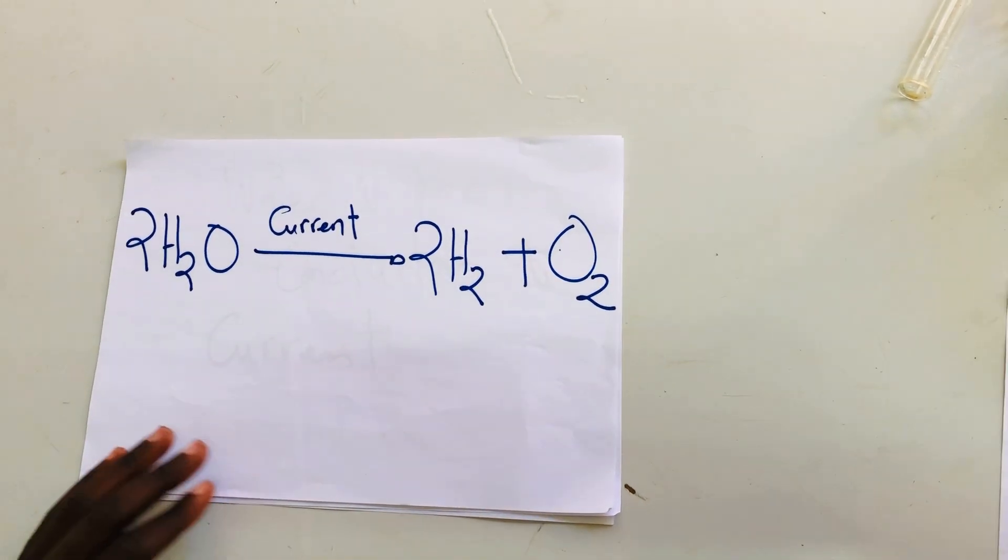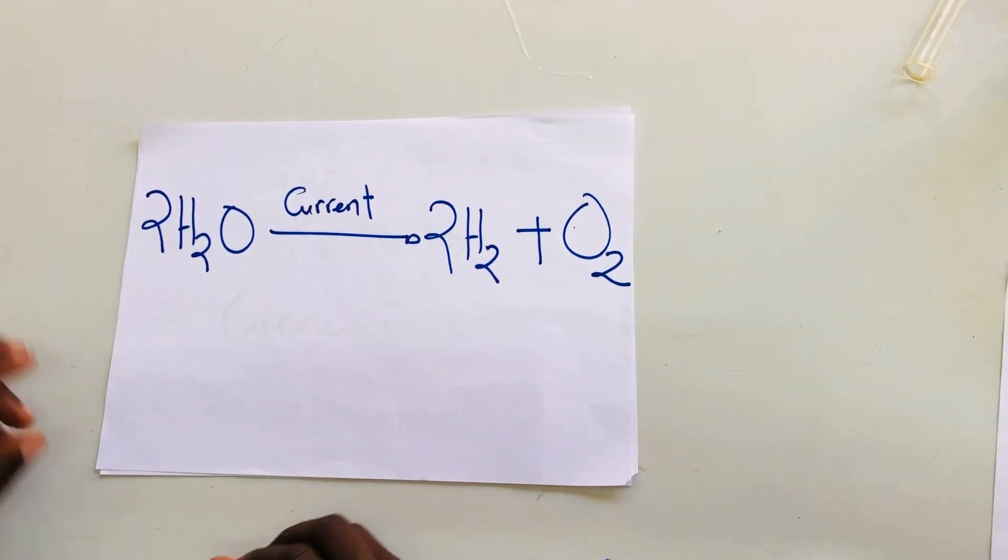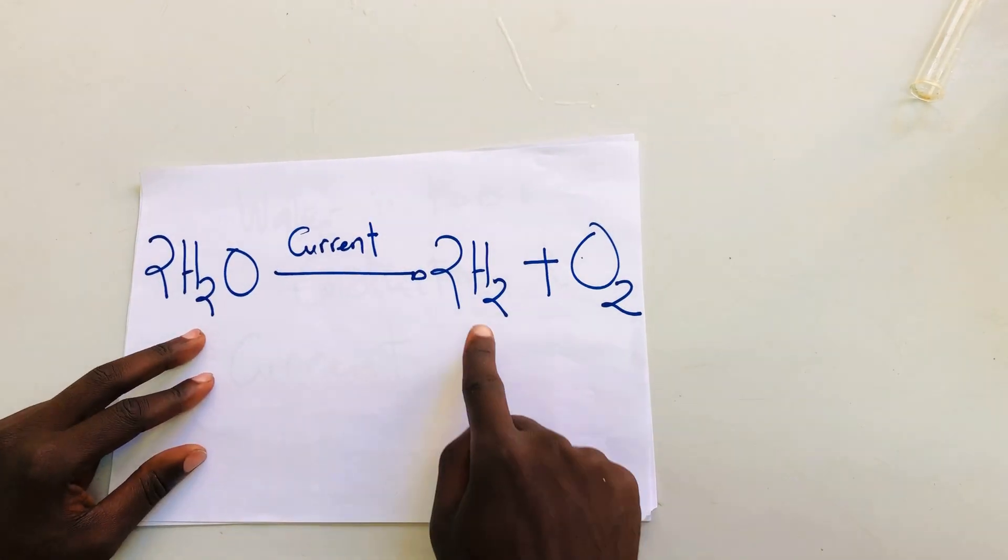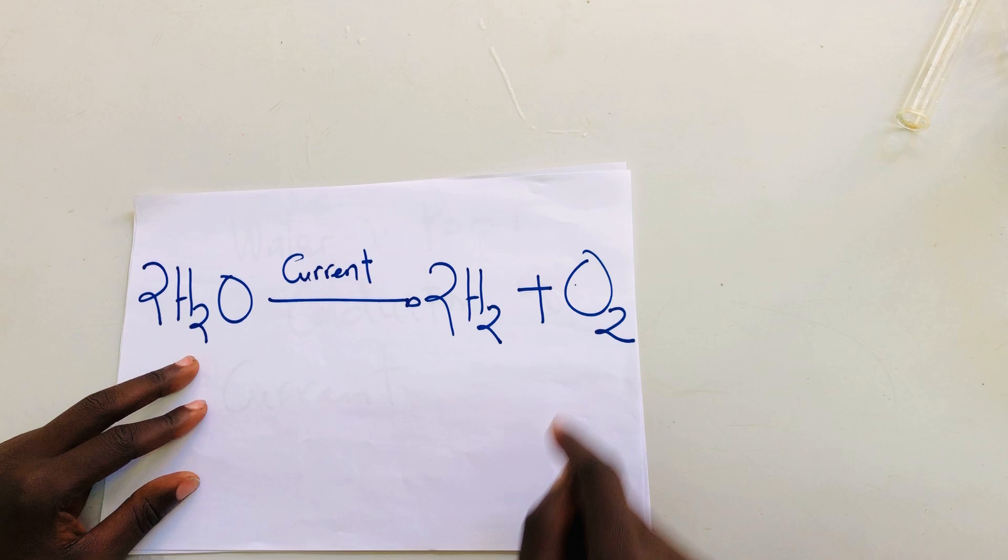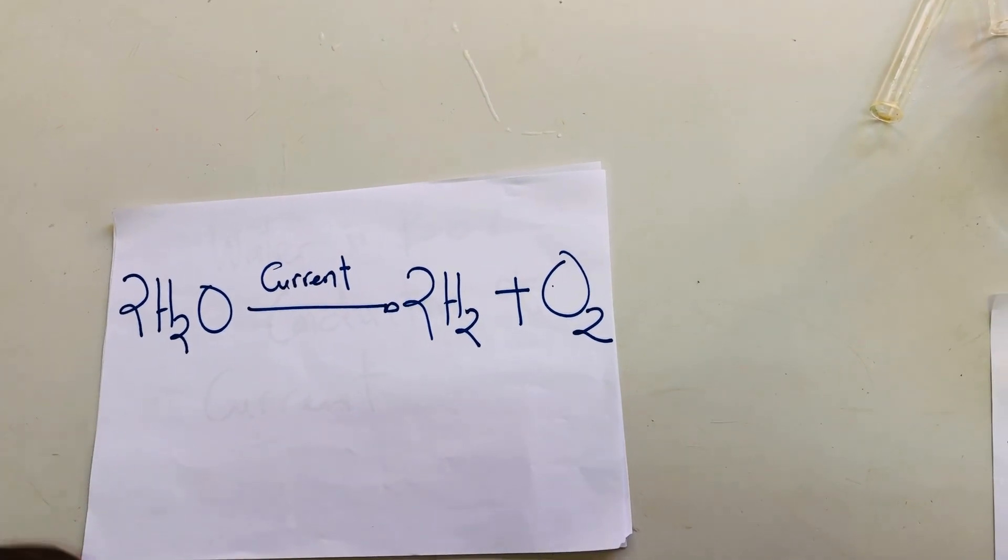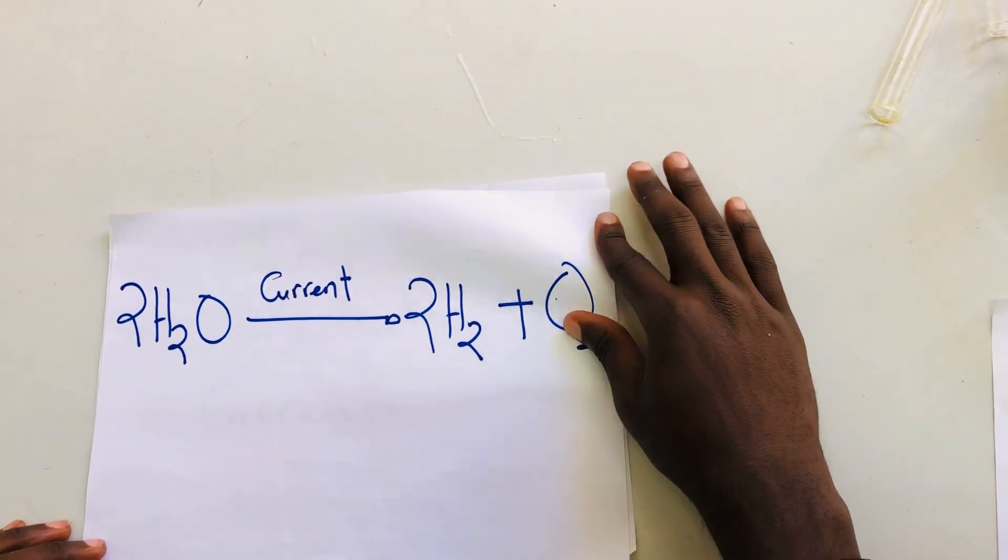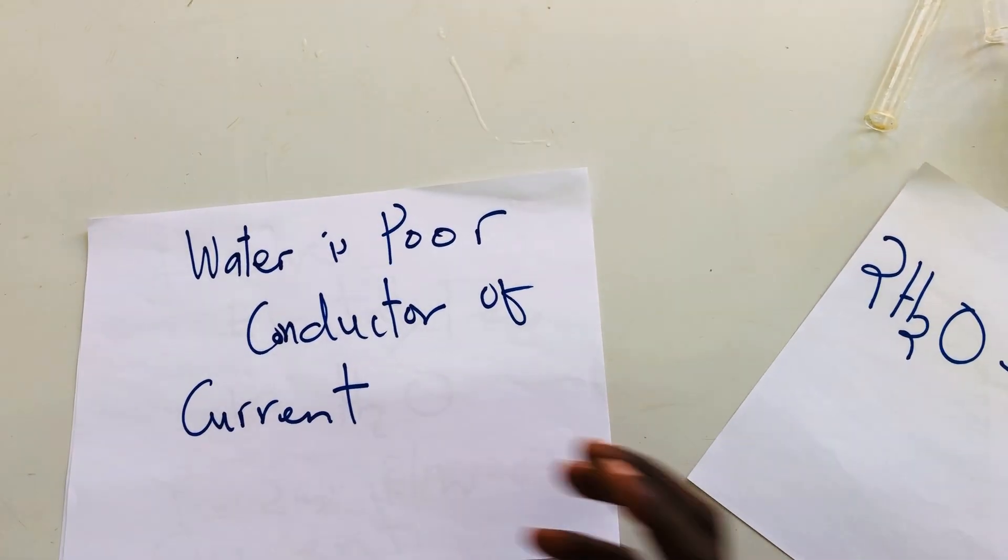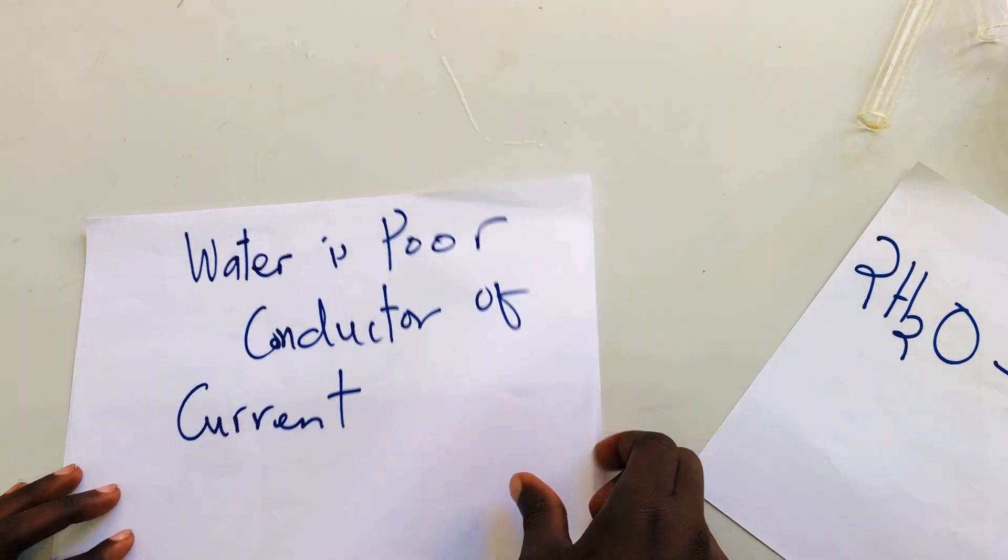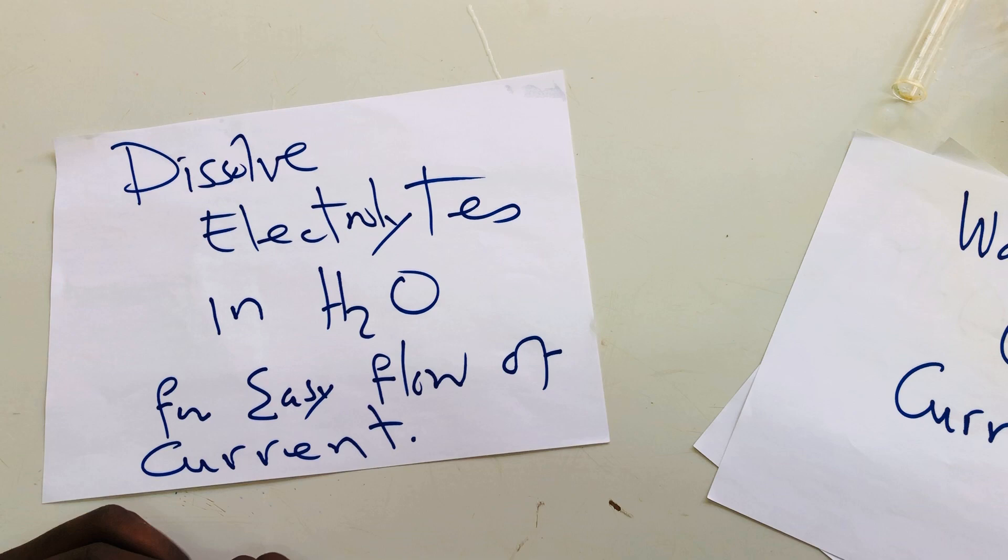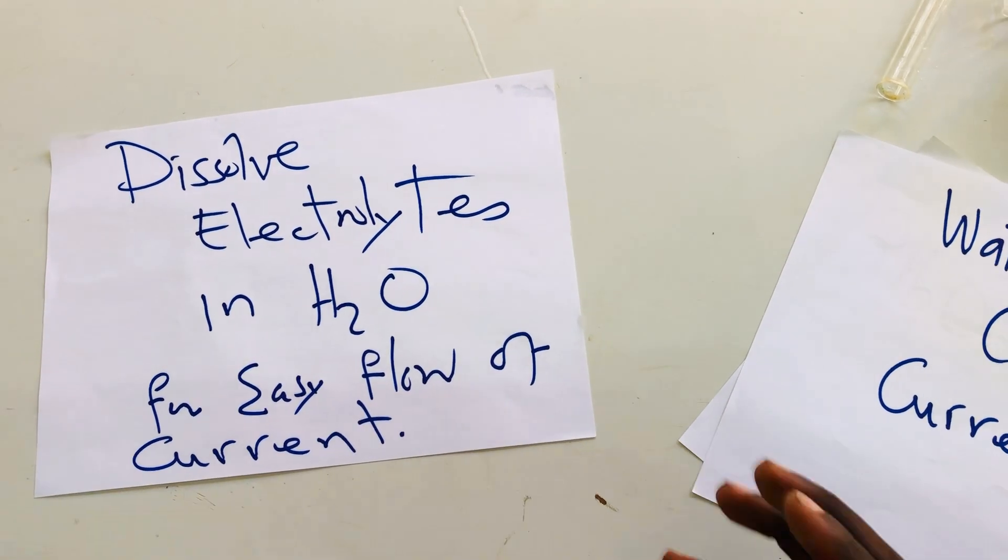Electrolysis of water means that we are going to use current to force this water to produce hydrogen gas and oxygen gas in the laboratory. But we know that water is a poor conductor of current, so we are going to dissolve some electrolytes in water for easy flowing of current.